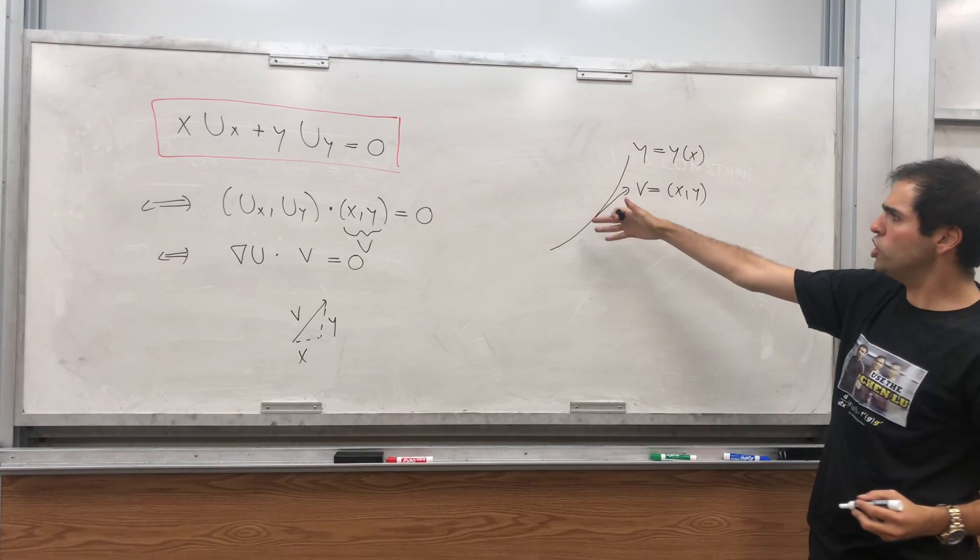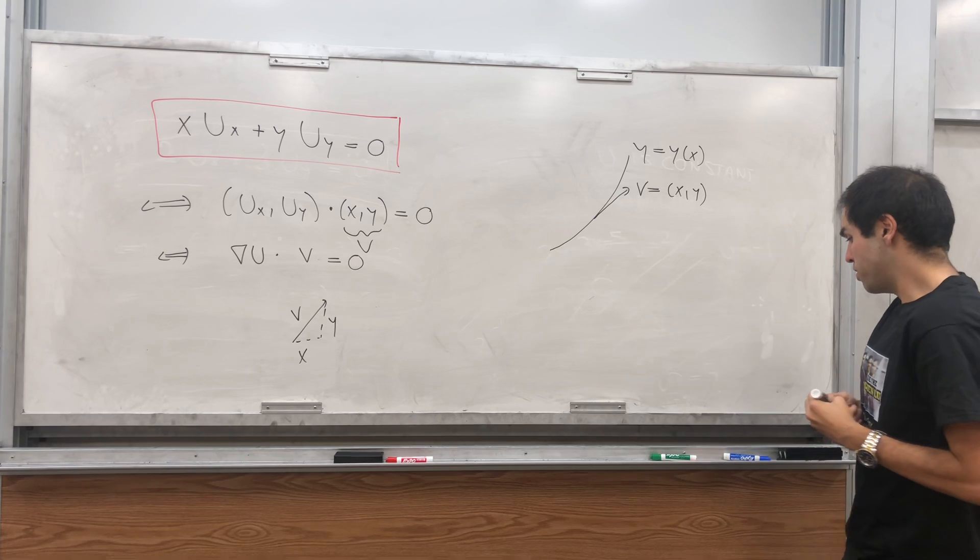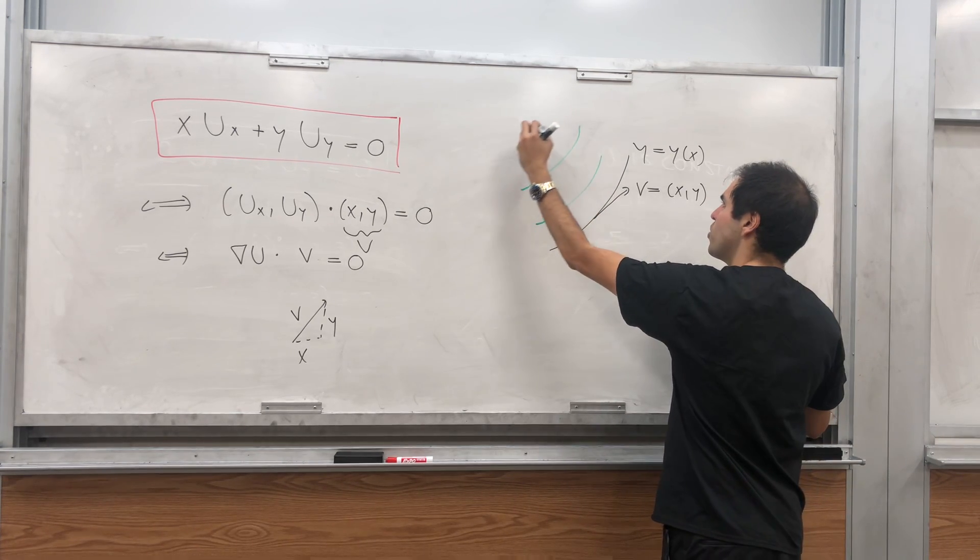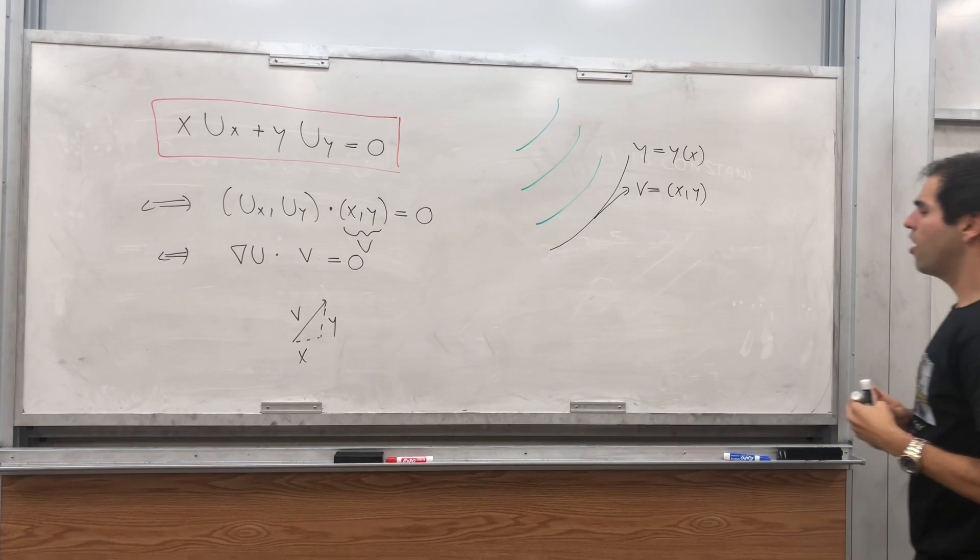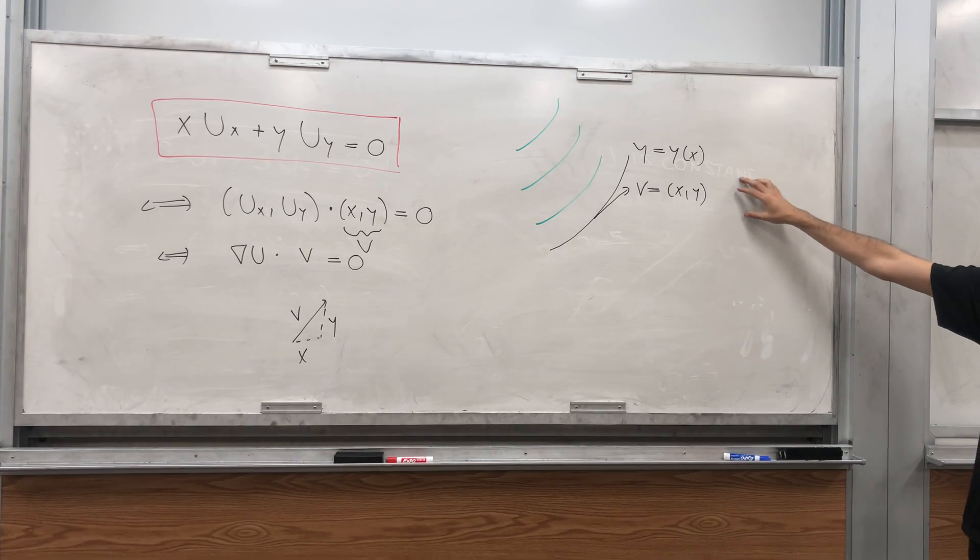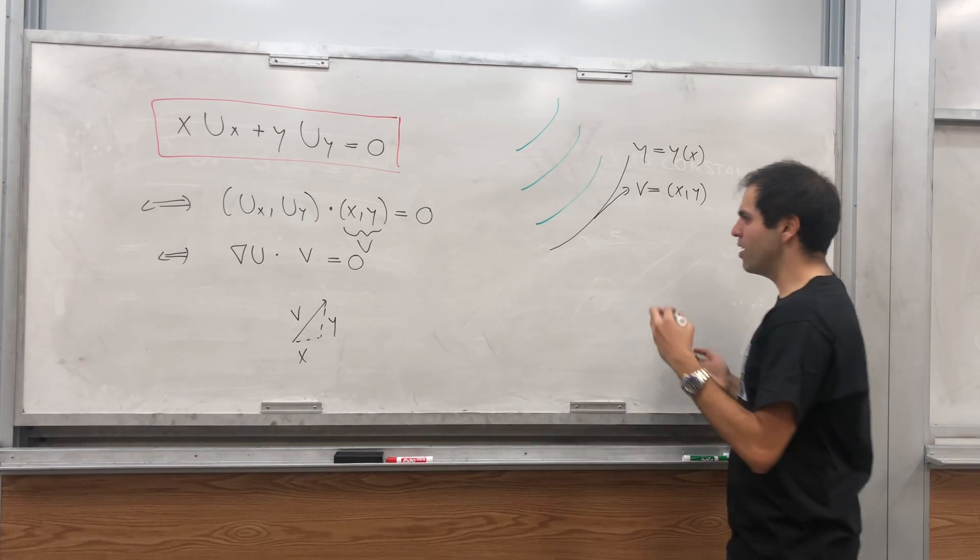So if v is x comma y, then basically the function u becomes constant on those curves whose tangent vector is x comma y. So really what you're trying to find are curves whose slope vector is x comma y.